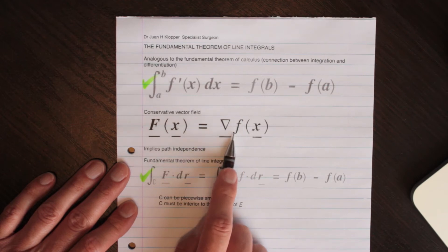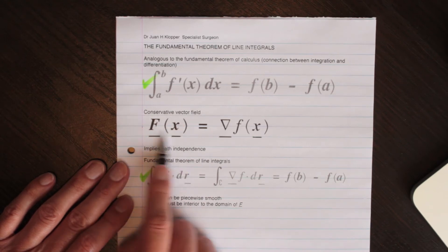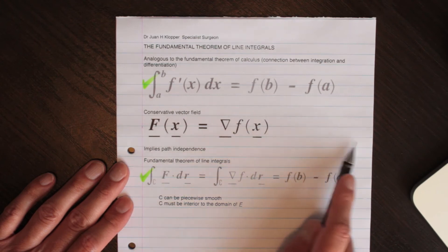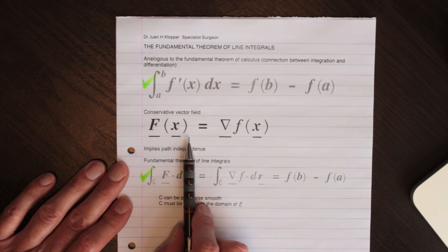But if you had this function and you took its gradient, you landed up with this vector, with a vector function, because you took the partial derivative, comma the next partial derivative, comma the next partial derivative, so you land up, and this is called a vector field.